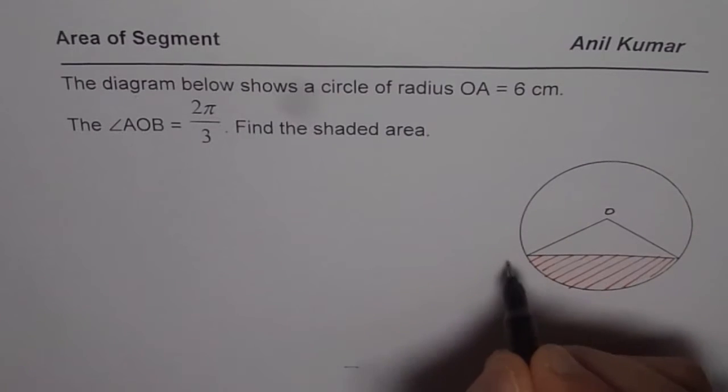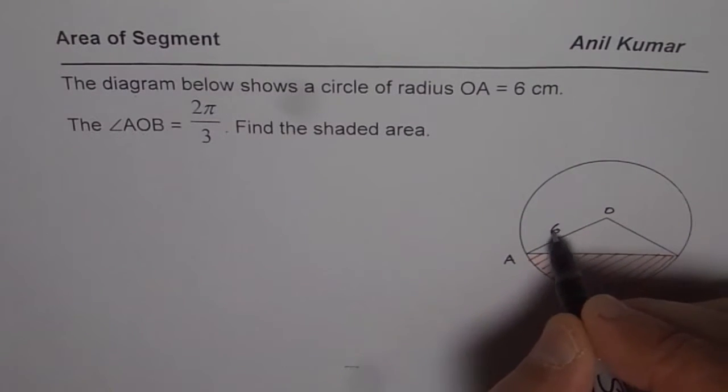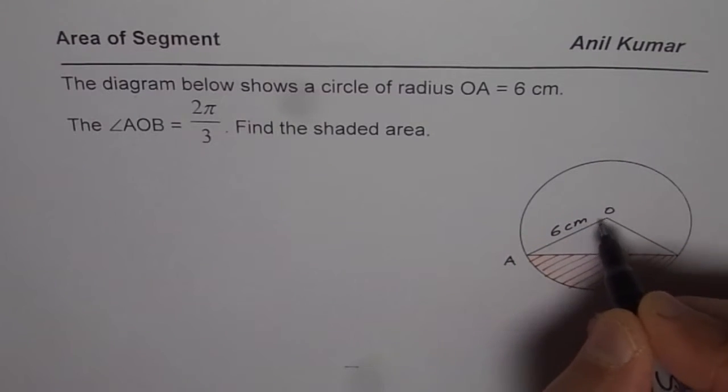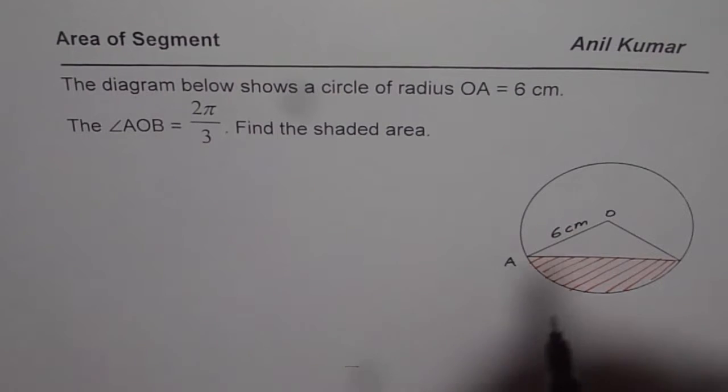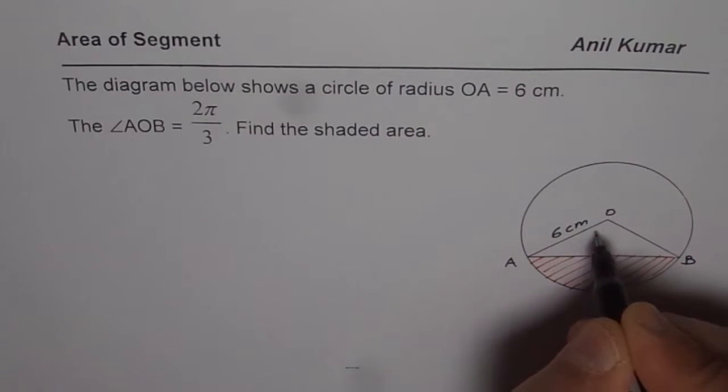So OA is our center, A is our point on the circle, center is 6 cm radius. Now angle AOB is 2π by 3, so let this be B, in that case this angle is 2π by 3.